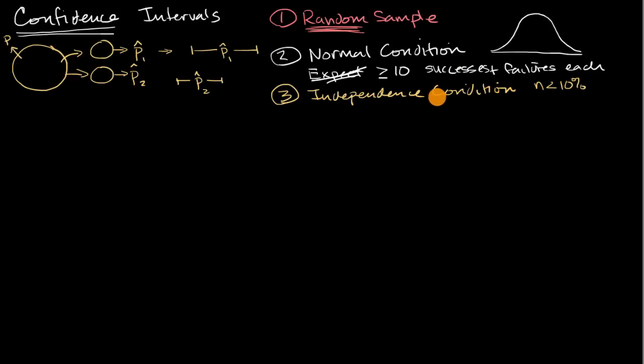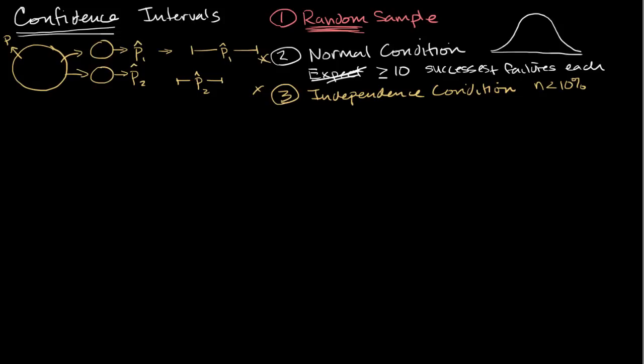And once again, this is valuable when you are sampling without replacement. Now to appreciate how our confidence intervals don't do what we think they're going to do when any of these things are broken, and I'll focus on these latter two, the random sample condition, that's super important, frankly, in all of statistics. So let's first look at a situation where our independence condition breaks down.